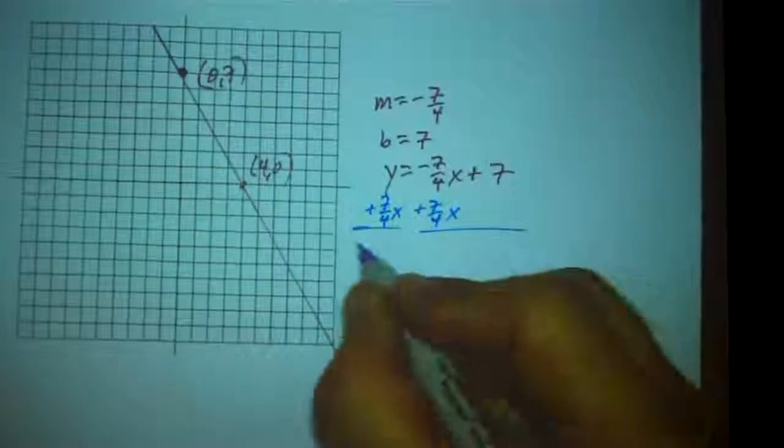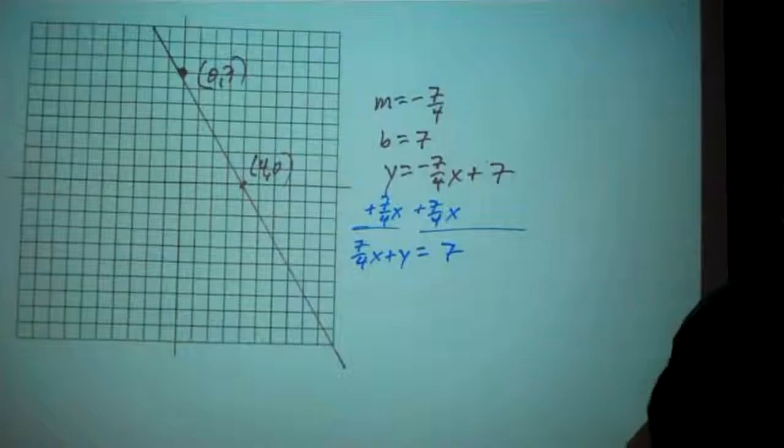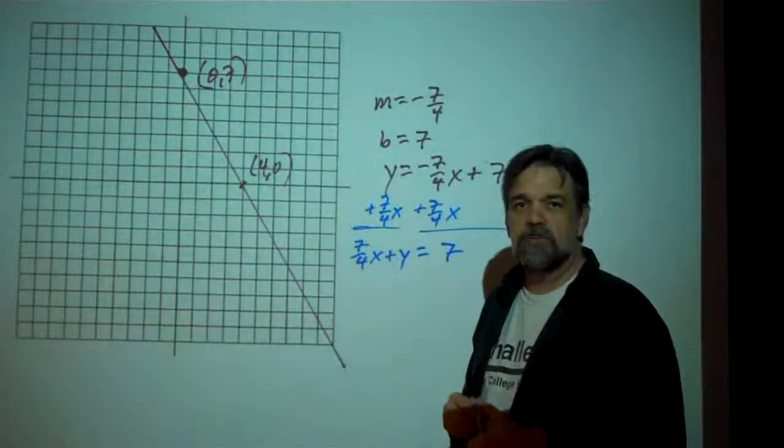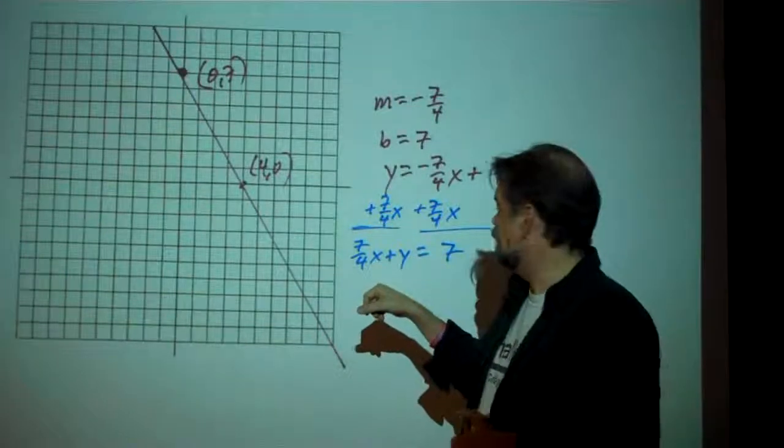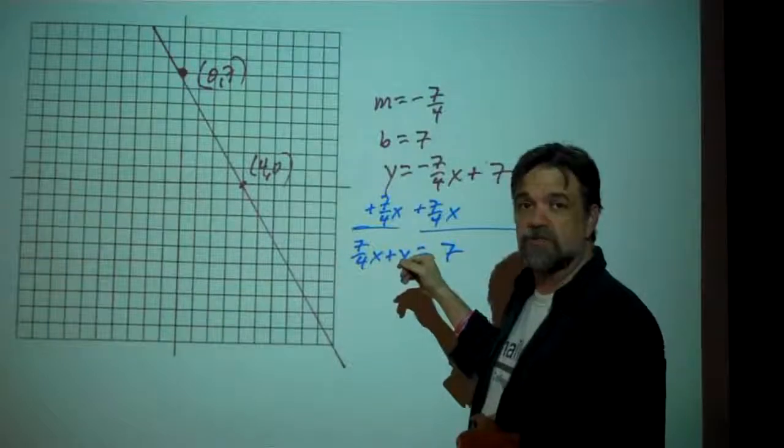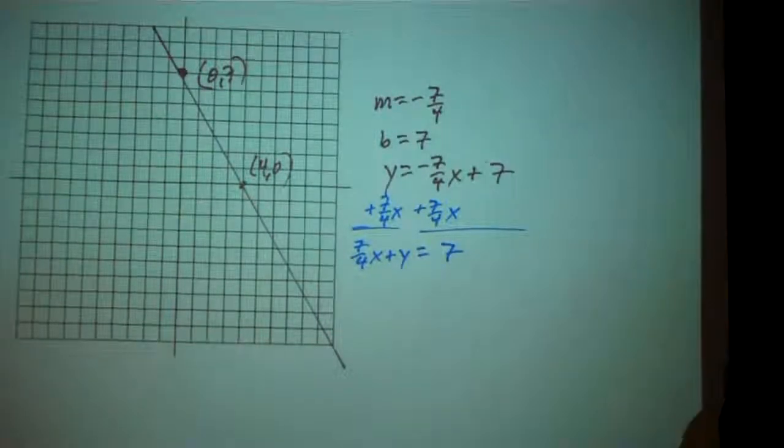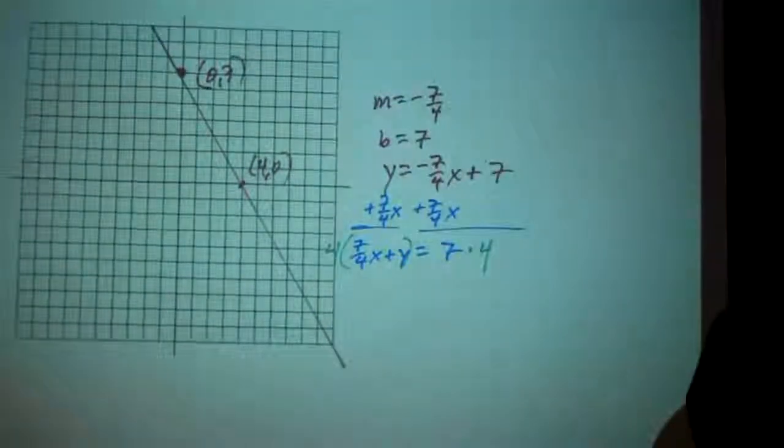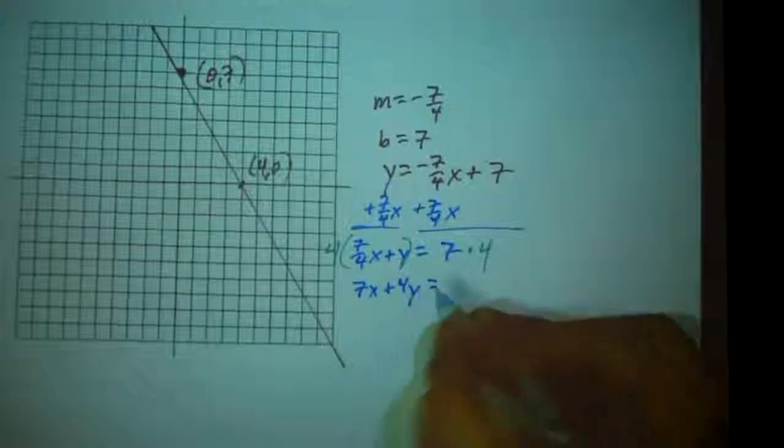And this is going to get me 7 fourths x plus y equals 7. But, the only thing left for me to do is put all of these coefficients in the form of integers. And the way I do that is I just look for any denominators that I have, and I'm going to multiply by that. If I had several denominators, I would multiply by the least common multiple of those denominators. So I see 4 as my denominator, so I'm going to multiply both sides of my equation, this side by 4 and this side by 4. And so that's going to get me 7x plus 4y equals 28.